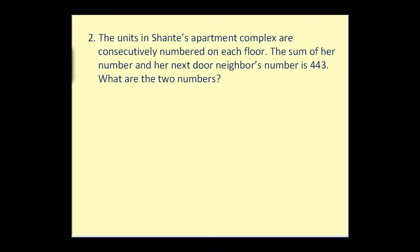Moving along, the units in Shantae's apartment complex are consecutively numbered on each floor. The sum of her number and her next door neighbor's number is 443. What are the two numbers? Well, first, let's talk about consecutively numbered. That essentially means that if one of the doors is 22, the next door would be 23.